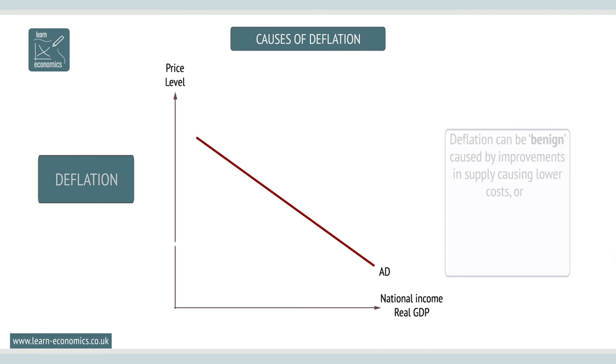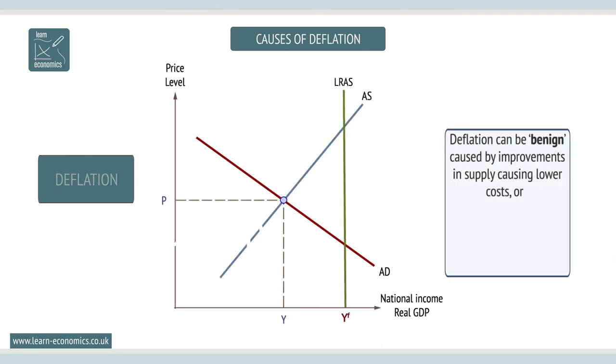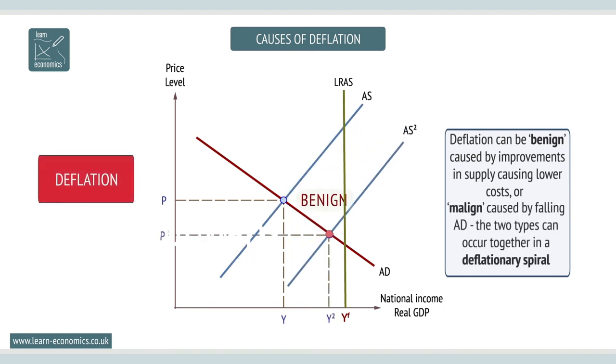Falling prices, called deflation, can originate from both the demand and supply side. Deflation can be benign, caused by improvements in supply which lower costs, or malign, caused by falling aggregate demand. The two types can occur together in a deflationary spiral.